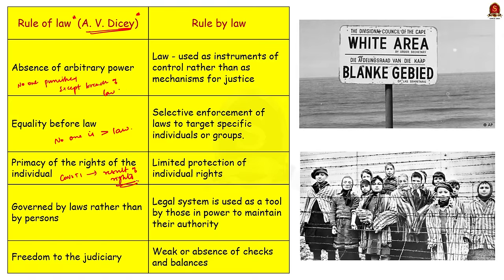In simple words, rule of law is a legal system governed by laws rather than by persons. It imposes legal constraints on political arbitrariness and overthrows tyranny or anarchy. Public welfare is the dominant consideration. The system provides safeguards for the protection of individuals and gives the judiciary freedom to control executives who exceed their jurisdiction.